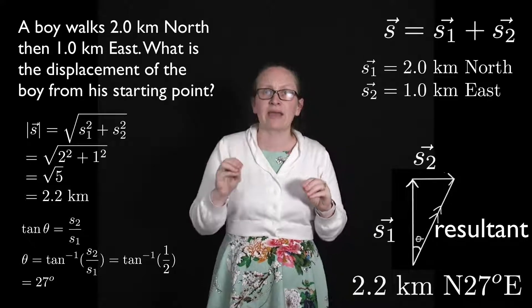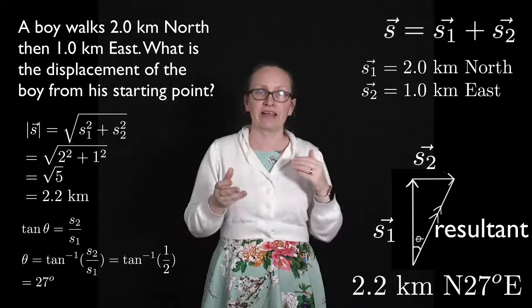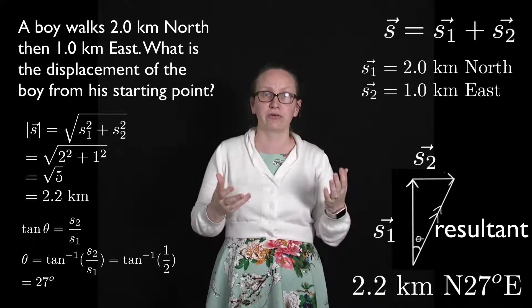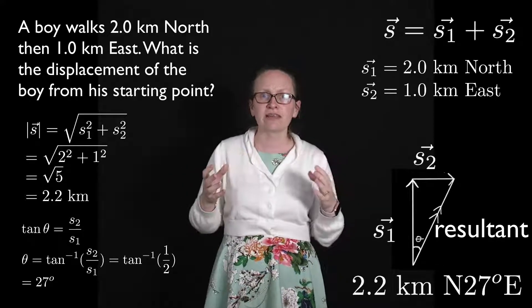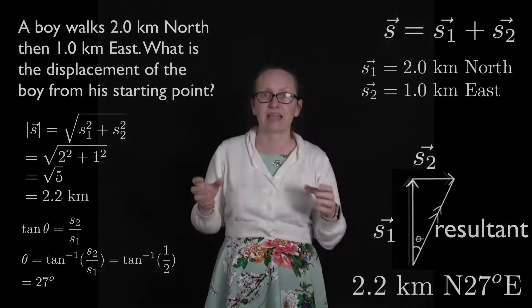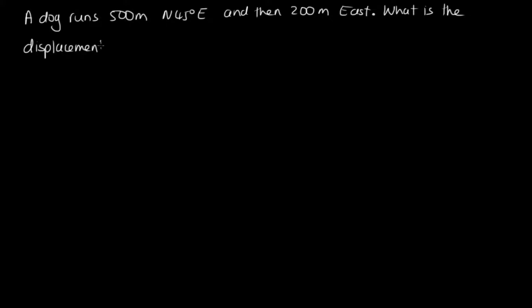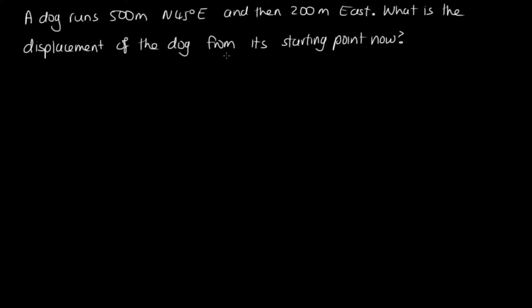It gets a little bit harder if we're not dealing with right-angle triangles — in those cases we may need to use the sine rule and the cosine rule. Let's look at one of these examples now. The question is: a dog runs 500 metres north 45 degrees east and then 200 metres east. What is the displacement of the dog from its starting point? A good way to approach this question is to start by drawing a diagram.